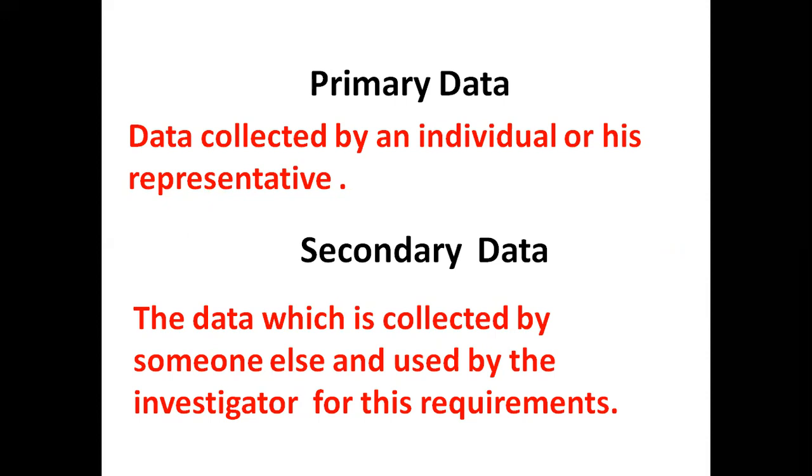Next is secondary data. The data which is collected by someone else and used by the investigator for his requirement is called secondary data. The main sources of obtaining secondary data are first data published by the state agencies or central government agencies. Secondly, reports published by some international organizations etc.